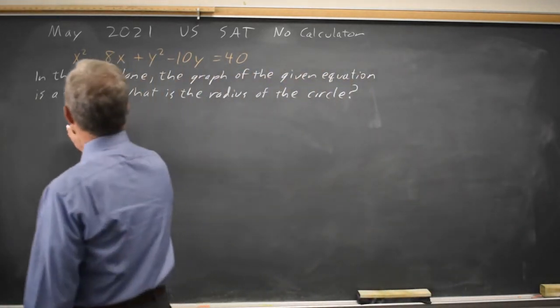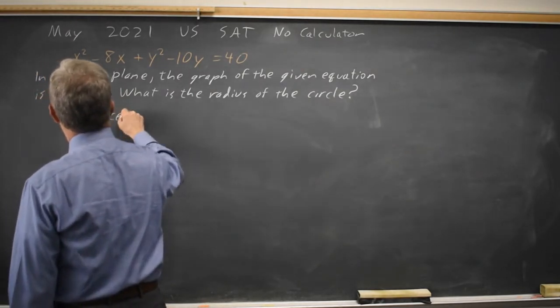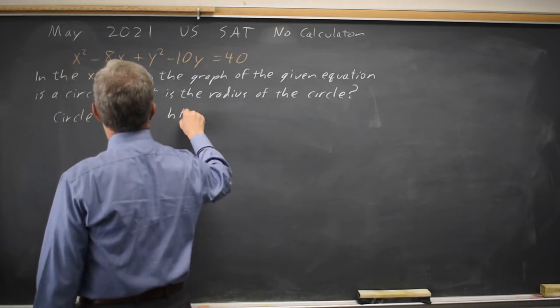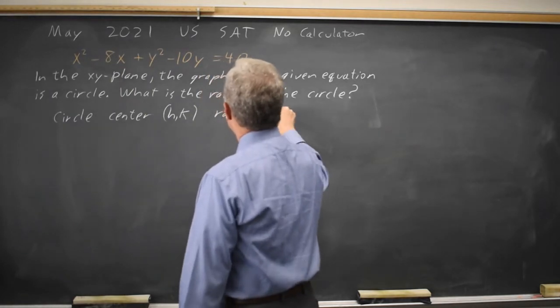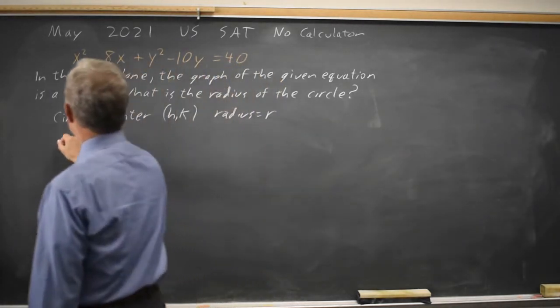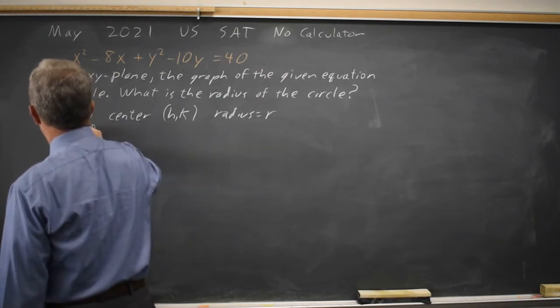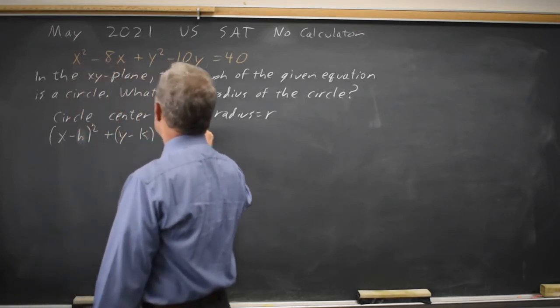It's helpful to remember that for a circle with center (h,k) and radius r, the equation is (x - h)² + (y - k)² = r².